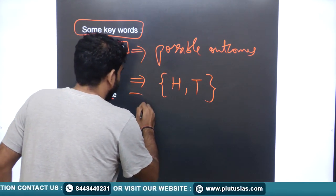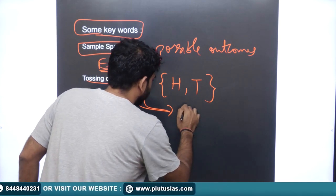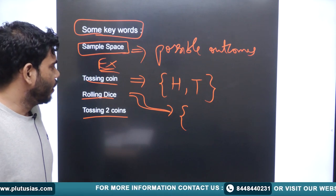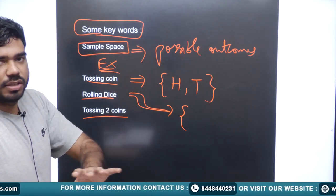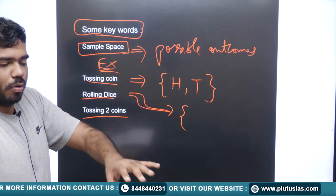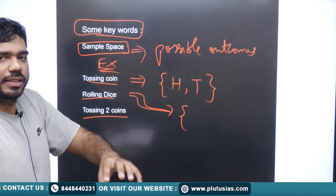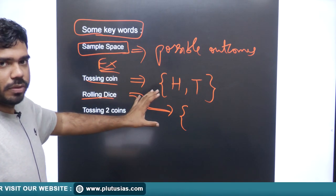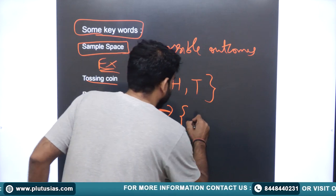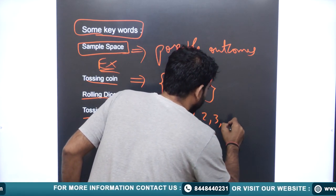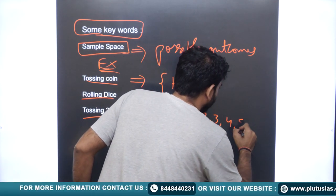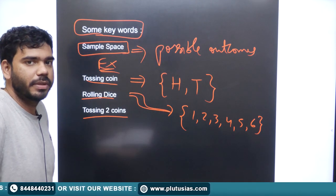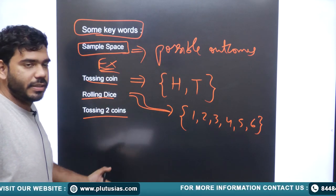The next example is rolling a dice. A simple dice has six different faces, each with a different number. So the possible sample space here is numbers one, two, three, four, five, and six — these six numbers are the sample space when we roll a dice.